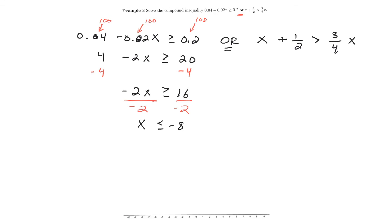For my other inequality, just like in the first one, I want to cancel the 2 and the 4. So I'm going to multiply 4 to every single term. This gives me 4x plus, well, 4 times a half is 2. On the other side, we're going to get 3x, and I still have greater than.